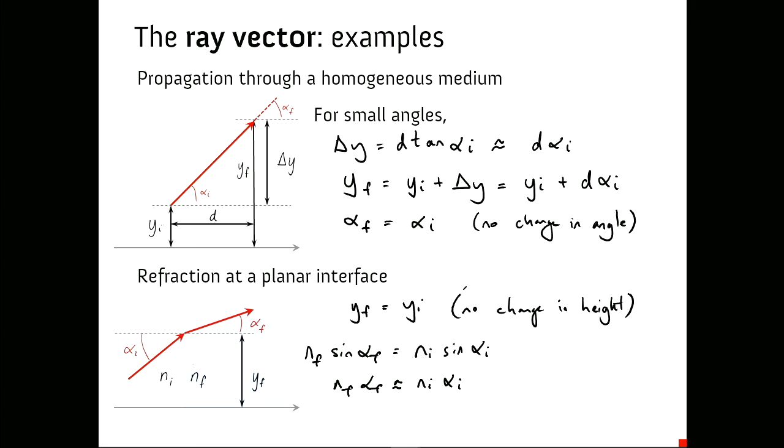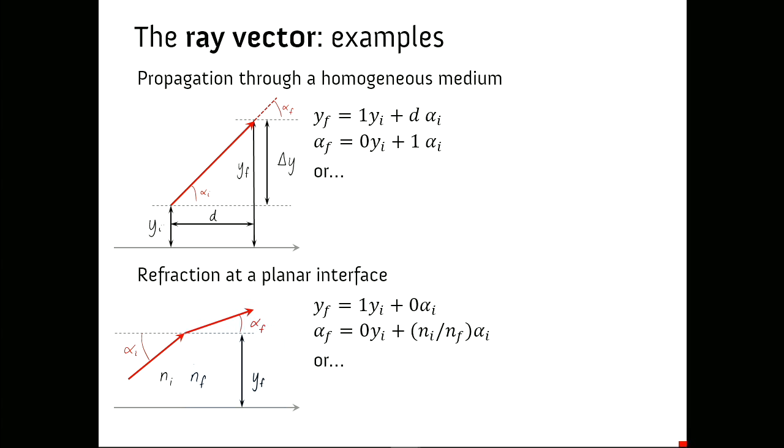Now, in both cases, we have a set of simultaneous linear equations. And that was the benefit we got from making the small angle approximation. So we rewrite those equations and we can see much more clearly how these are two sets of simultaneous linear equations with the final variables y and alpha, depending on the initial variables, via some constants. And because these are simultaneous equations, we can write them, of course, in vector form. So we're going to write as a column vector the ray's final height and angle in terms of the ray's initial height and angle.